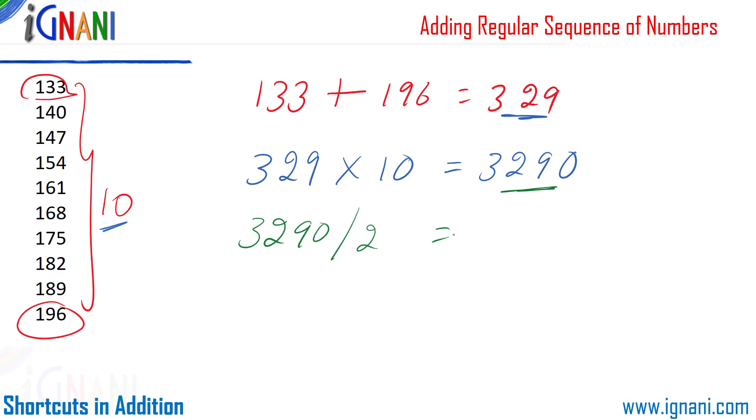Now let's take this 3,290 and divide it by 2. We get 1,645, which is the result. Isn't that simple?